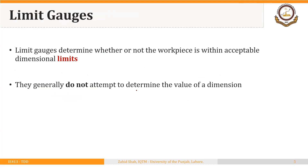Limit gauges determine whether or not the workpiece is within acceptable dimensional limits. They give us information on whether the upper and lower limit is violated or not. We have discussed the concept of limits and tolerance in detail in a previous lecture. These gauges do not attempt to determine the value of a dimension — they are a yes/no type of inspection tooling, and they are also called attribute gauges because they provide qualitative information about the conformance of a part.